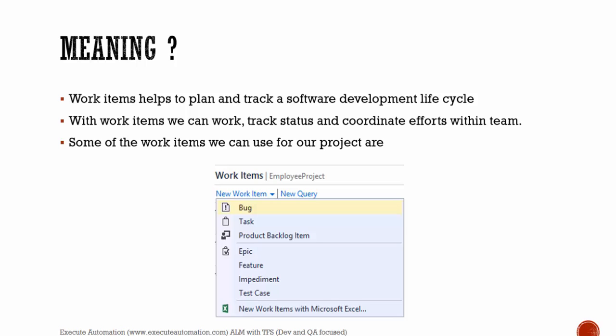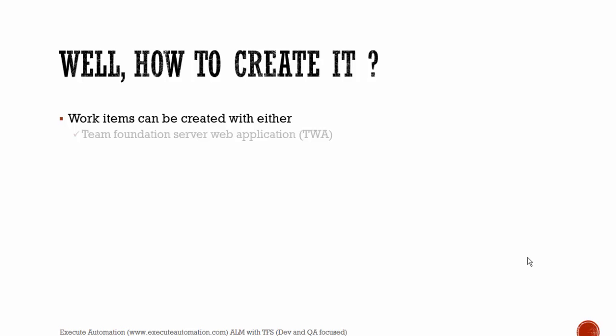The first three — requirements, tasks, and bugs — are the core items. Based on a requirement you can create a task, and if there are any issues you create a bug. Other items like epics, features, impediments, and test cases are also important and related to these. All these work items can be created using either the Team Foundation Server web application (TFW) or using Team Explorer in Visual Studio.